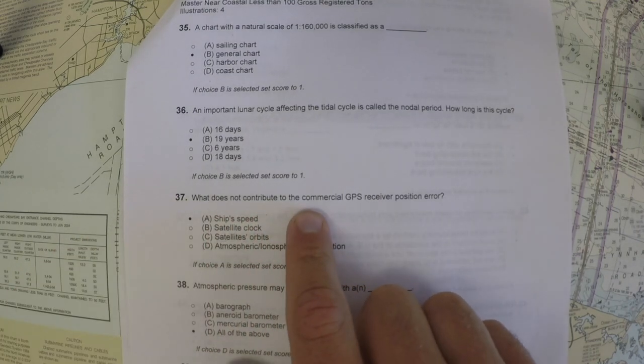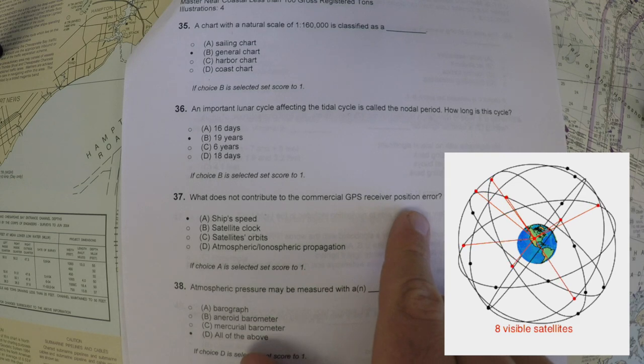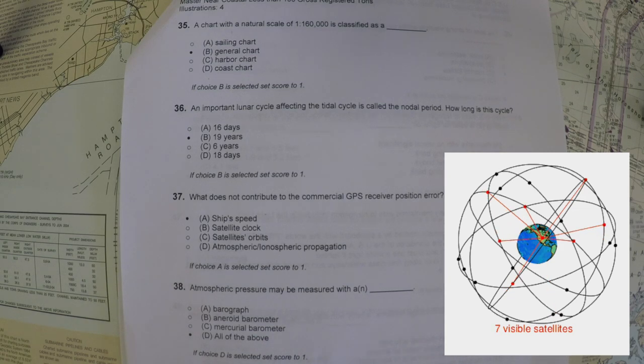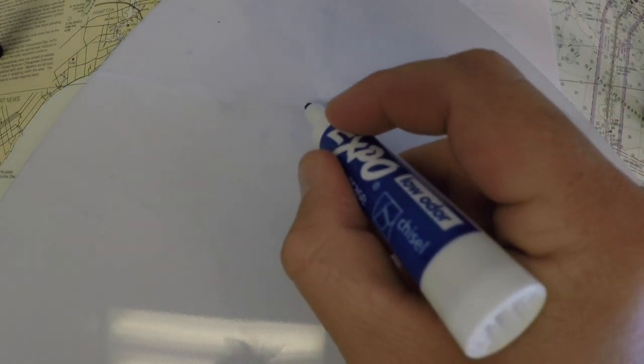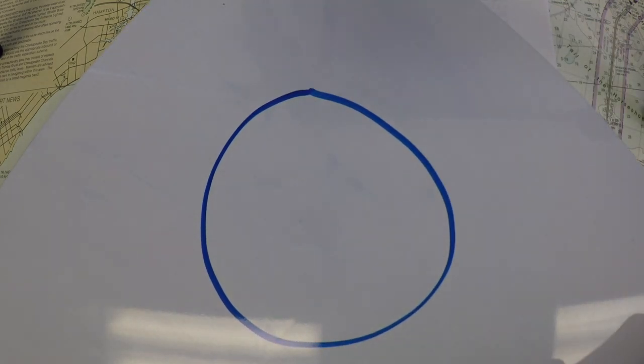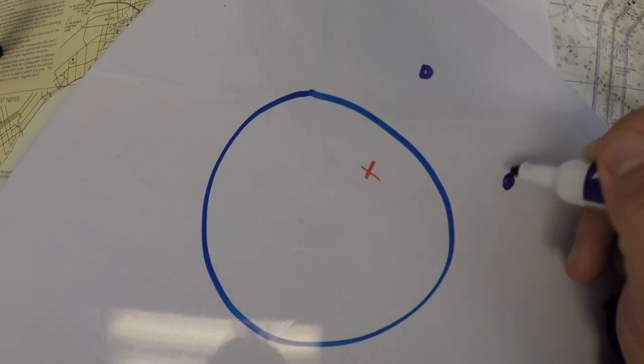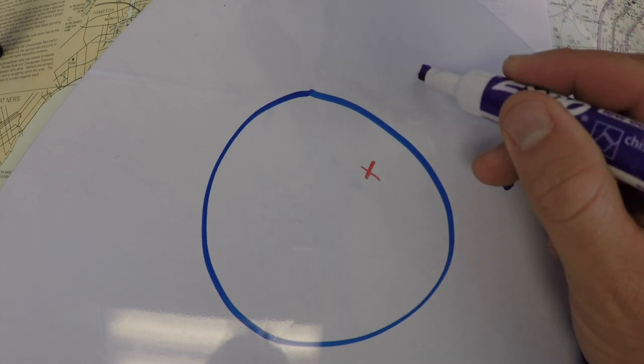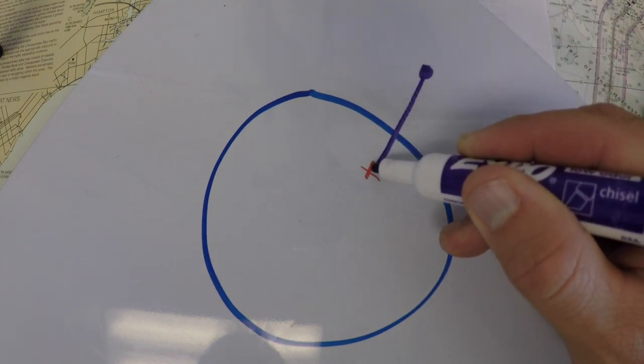Number 37: what does not contribute to commercial GPS receiver position error? This one is guiding you to know that GPS is based on time signals. You see images of GPS, but really what's happening on Earth—if your position is somewhere on the Earth, GPS works by having a whole bunch of different satellites up in space. There's dozens of them, but you need at least three or four to get a signal.